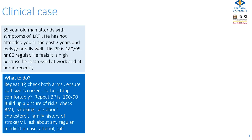Now start building up a picture of risks. Calculate his BMI, ask about smoking, ask about cholesterol and family history of vascular events, ask about any regular medication use including non-steroidals, ask about his alcohol consumption, and ask whether he adds salt to his food.